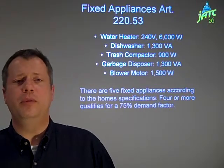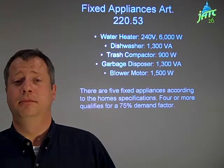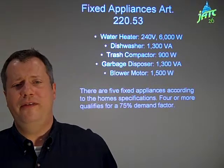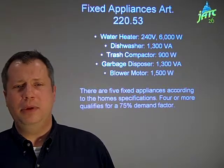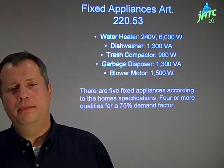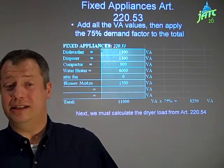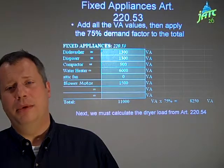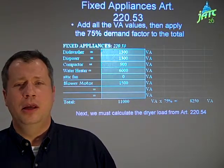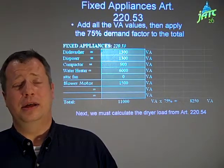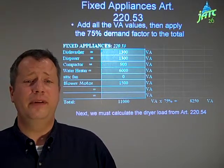That should make some sense — the more loads there are, the less likely it is that they are all on at the same time. Because we have five of them, we can total up all the nameplate ratings and multiply that total — in this case 11,000 volt-amps — by 0.75 or 75%. Our fixed appliances allowance comes out to 8,250 volt-amps. That's the second part.